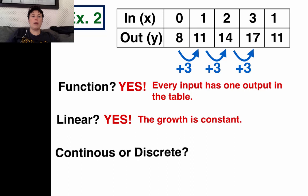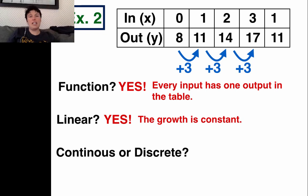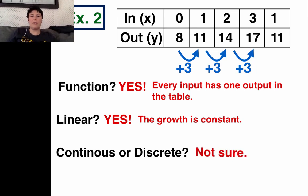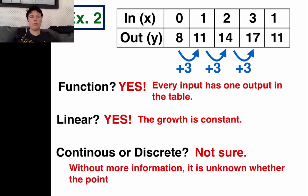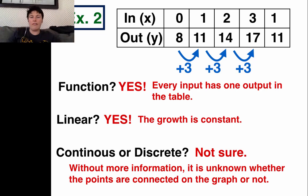Is it continuous or discrete? This is a bit of a trick question, because you can't see the graph and you don't know enough about what these points mean. You don't know if they're connected or not connected. So without more information, whether the points are connected on the graph is unknown.